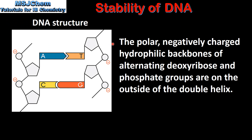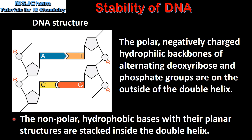The polar negatively charged hydrophilic backbones of alternating deoxyribose and phosphate groups are on the outside of the double helix. In this diagram we can see the negatively charged hydrophilic backbone of alternating deoxyribose and phosphate groups. On the inside of the double helix structure we have the non-polar hydrophobic nitrogenous bases.